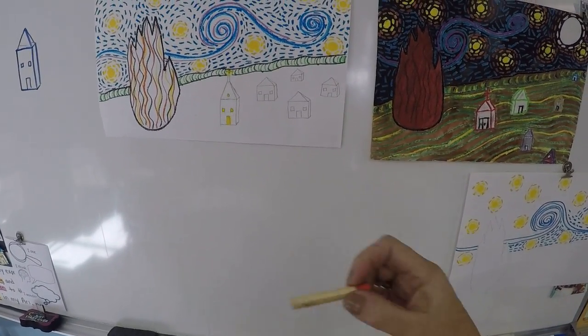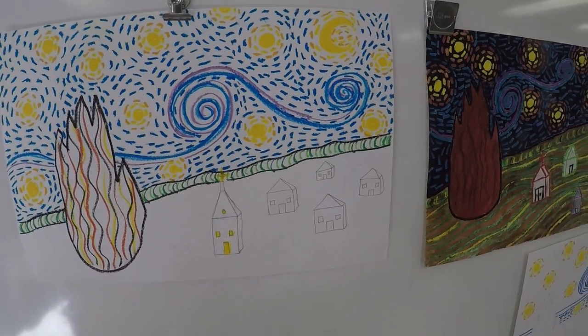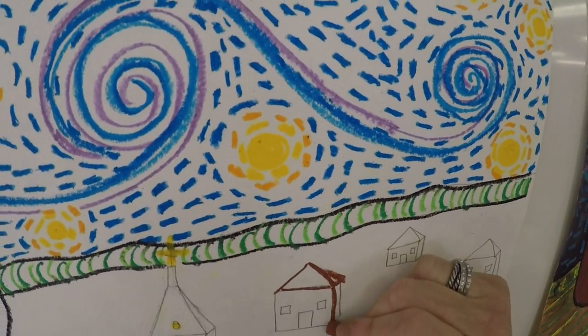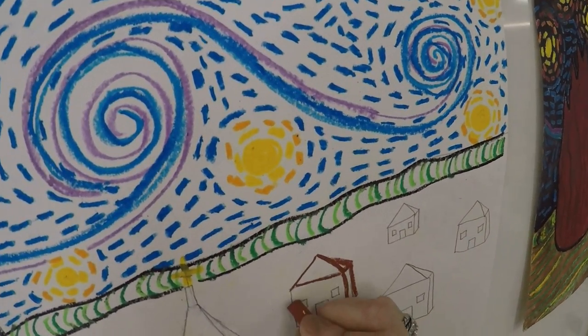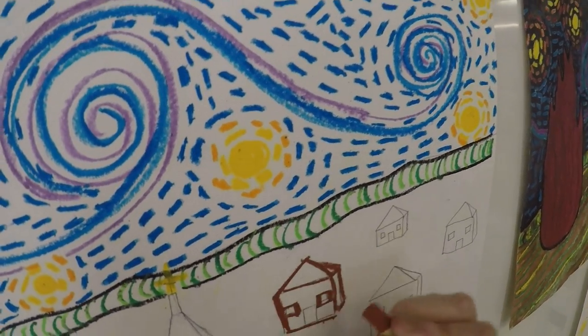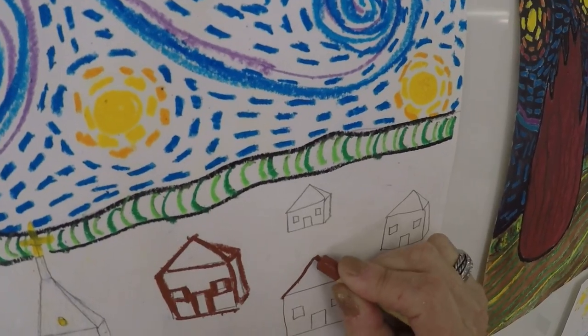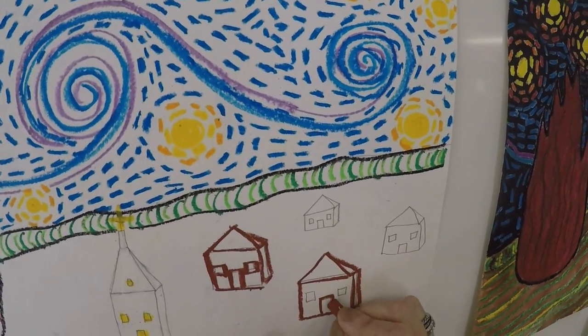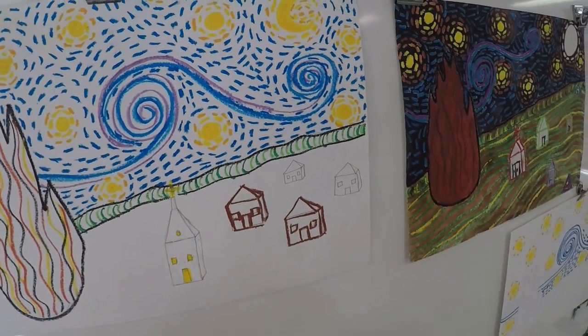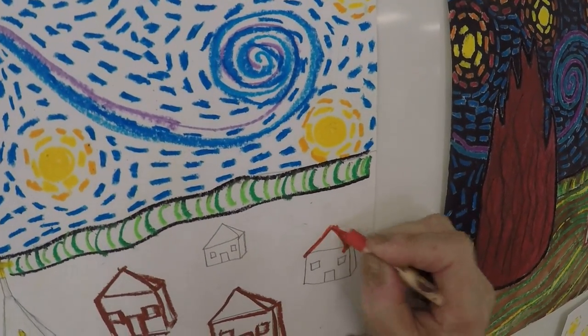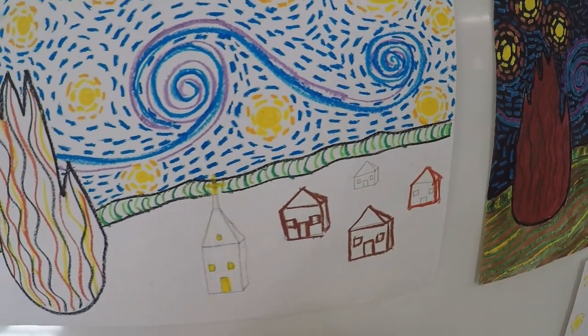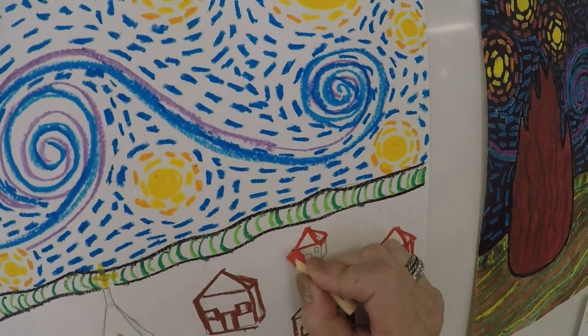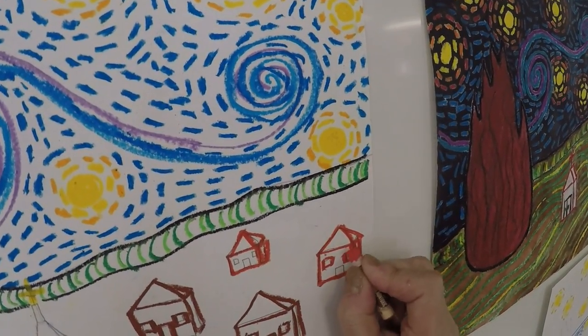My other houses I think I'm going to make red and brown. So you're just going to outline them. If you want to color them in you can, I'm going to paint them though so I'm just going to outline them. And I'm going to do the two in the distance this red. If you break an oil pastel that's okay, I do it all the time.